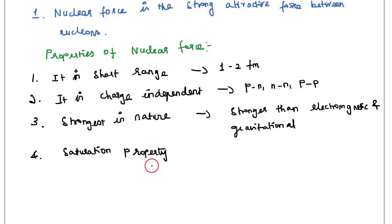Fifth property: it is a non-central force. Why? Because it depends on spin and orientation. That's why the nuclear force is a non-central force.